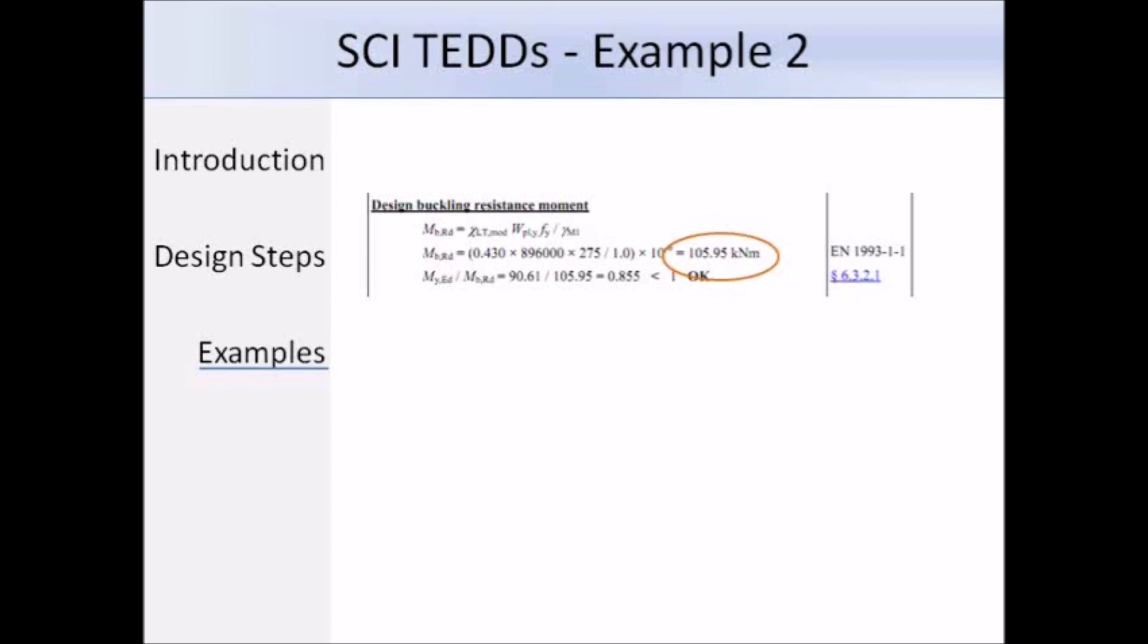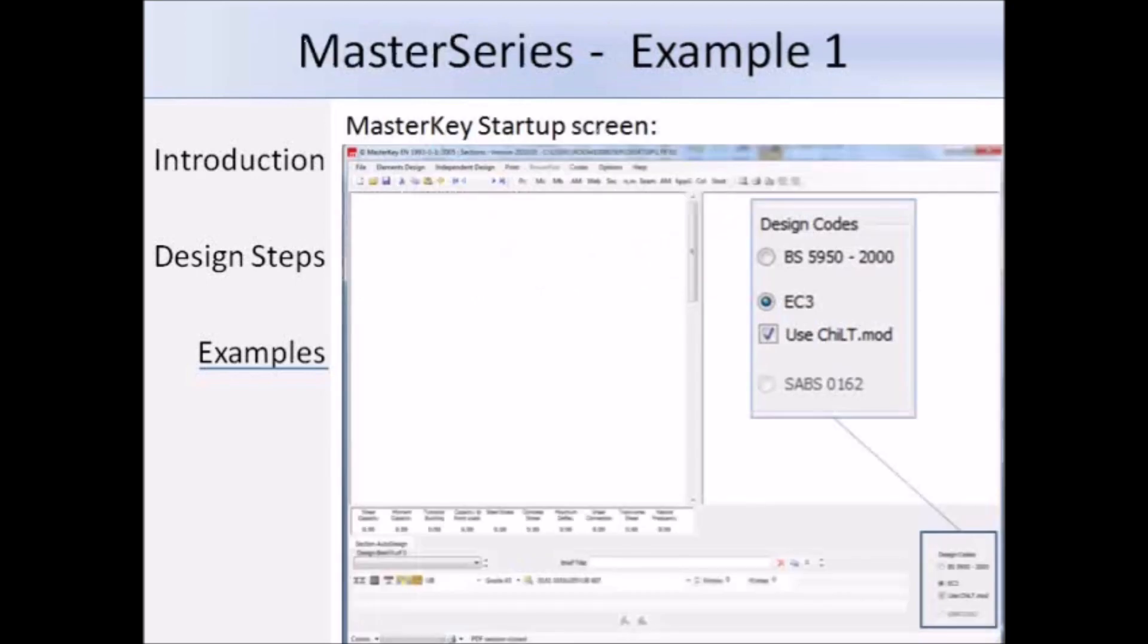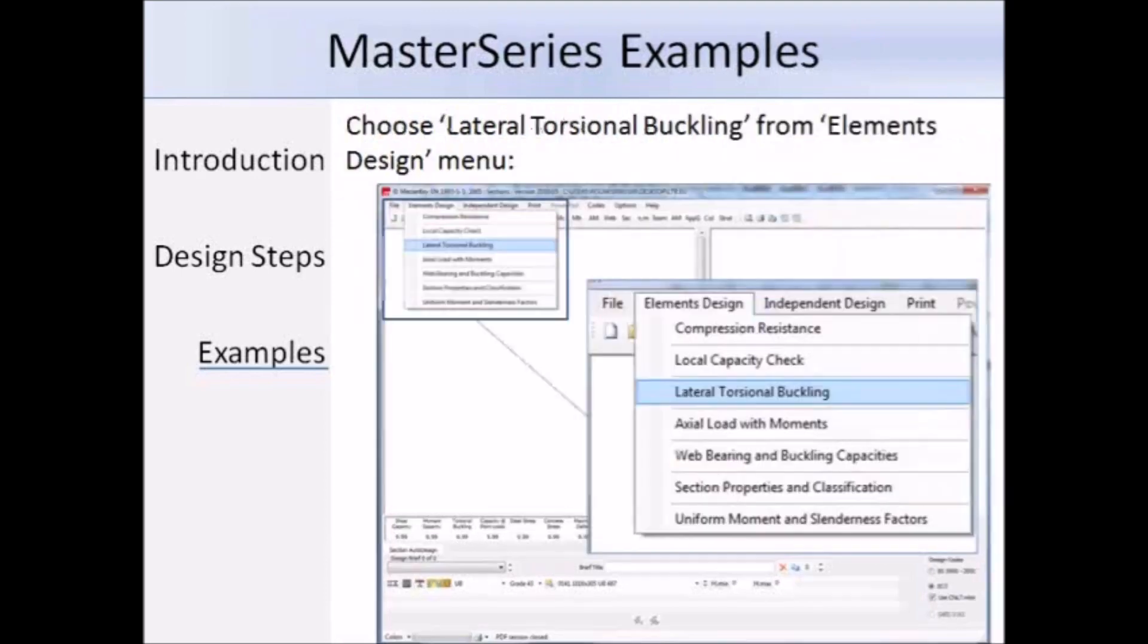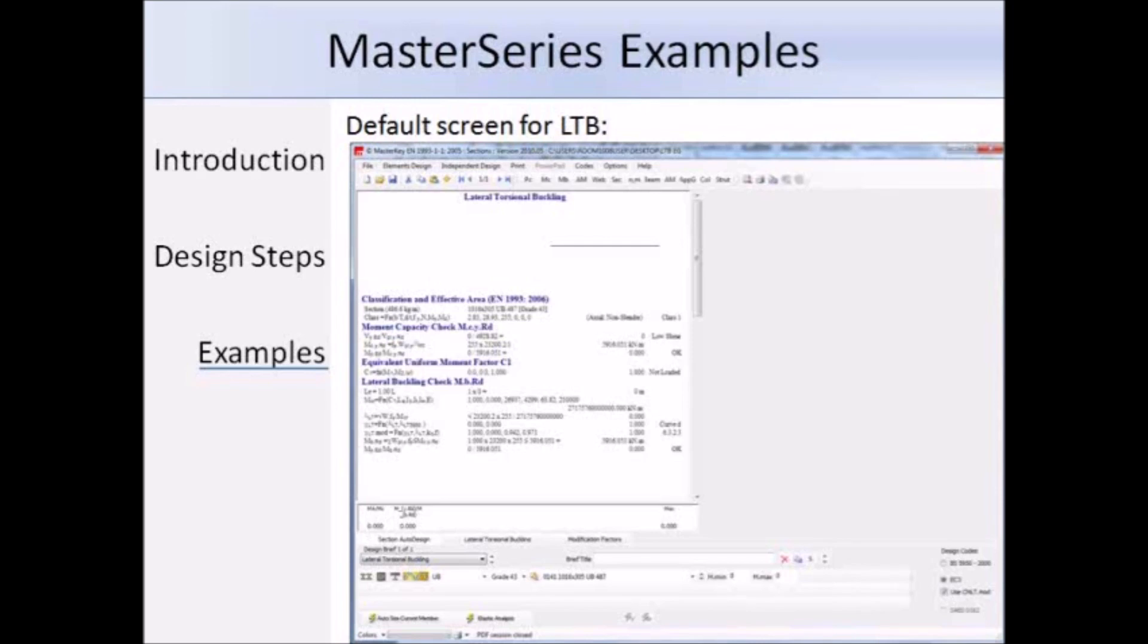So now, I'm going to go through the same LTB scenarios using MasterSeries software, so I'm going to be using MasterKey for steel design, and this is the default screen that comes up. So the first thing that I will do is select the eurocode 3 design code option. We're looking to analyze sections against LTB, so we need to select lateral torsional buckling from the elements design menu, and this is the default screen that appears when you select the lateral torsional buckling option.